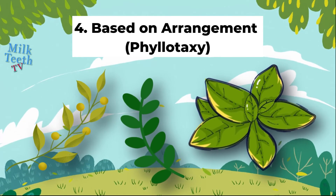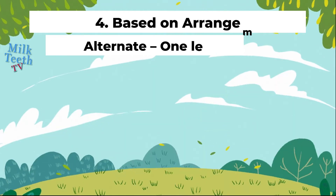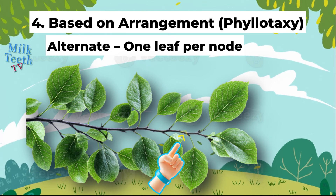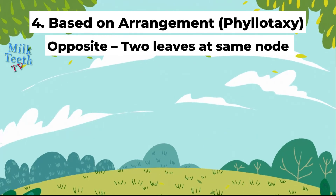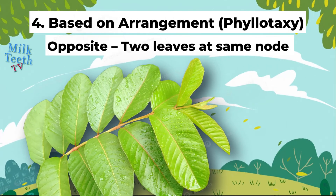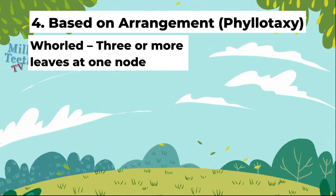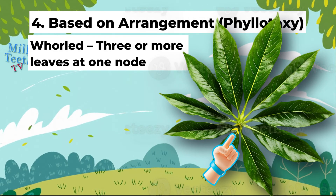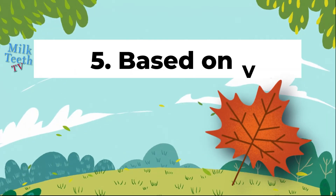We can also classify leaves based on the arrangement of leaves on the stem. This is known as phyllotaxy. Based upon phyllotaxy, leaves can be classified as alternate — one leaf per node arrangement, as seen in china rose. Number 2: opposite — two leaves at the same node, as seen in guava. Number 3: whorled phyllotaxy, wherein three or more leaves may appear at a single node. Plants like alstonia have more than ten leaves from a single node.